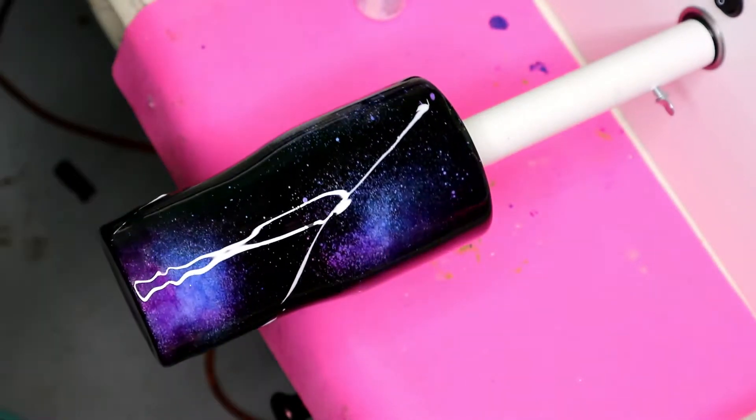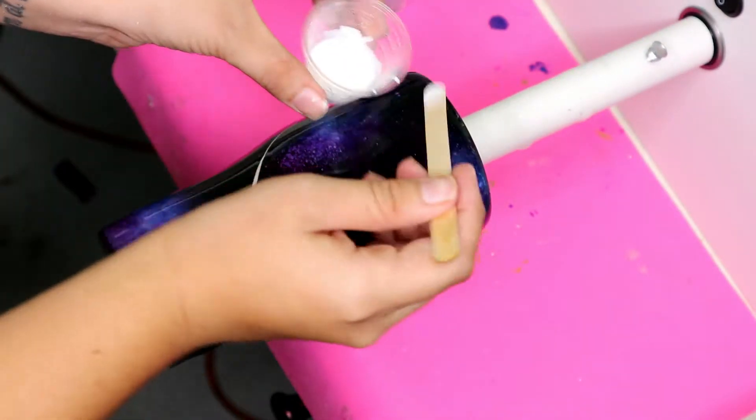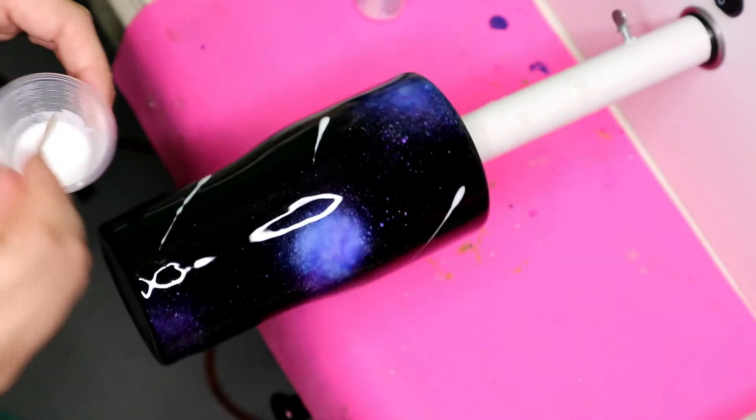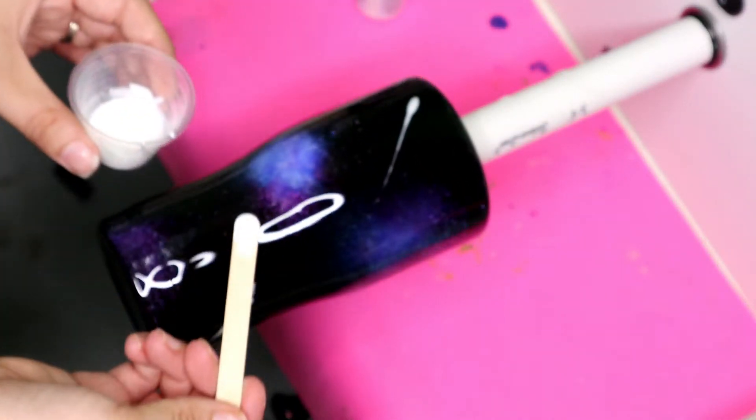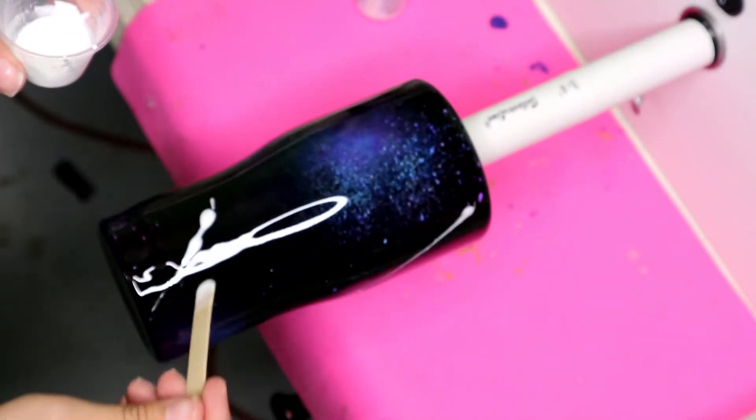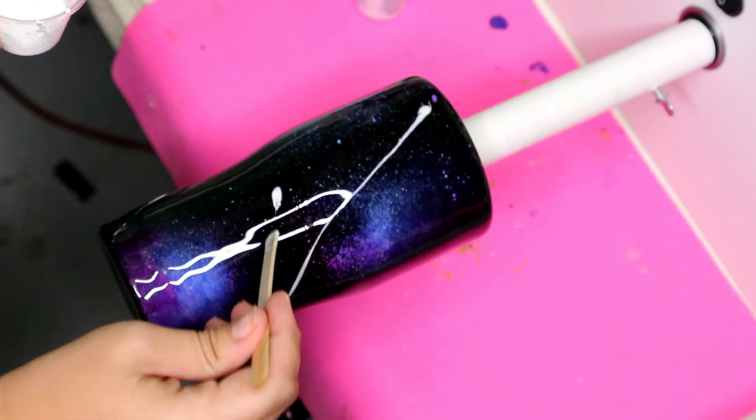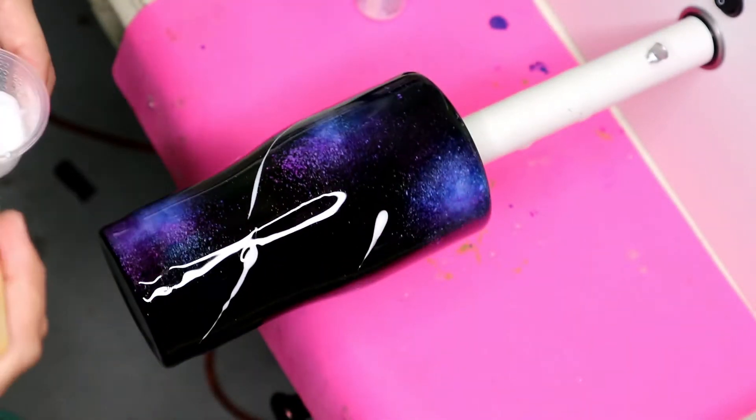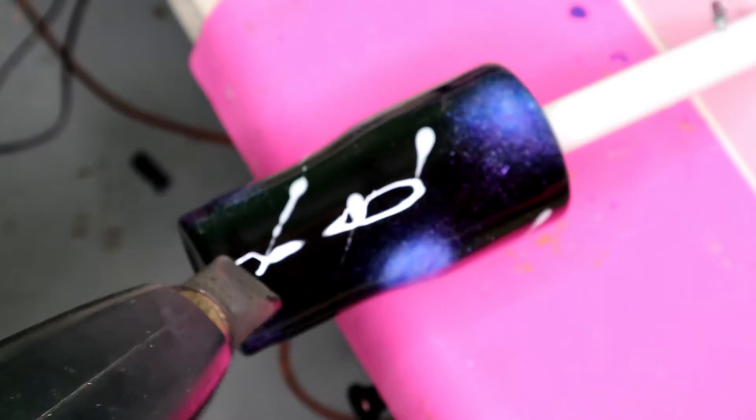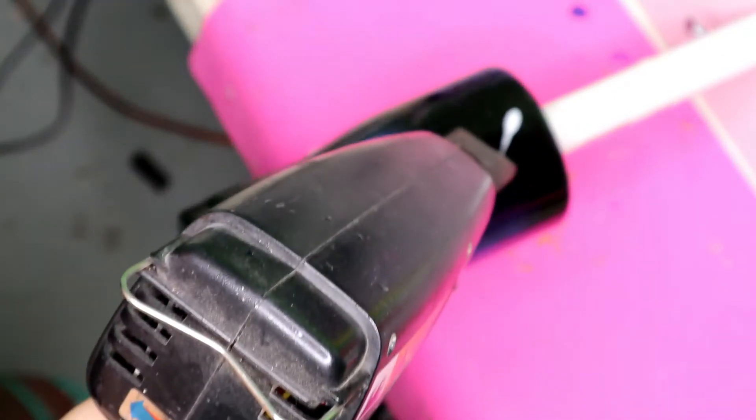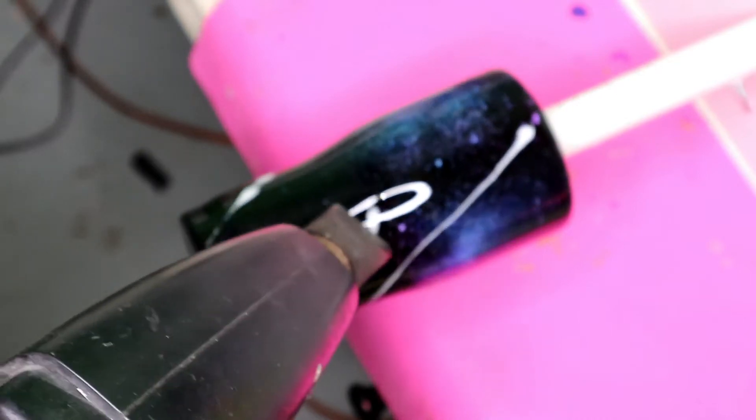So first you're going to want to lay down a layer of epoxy because you want your epoxy pigment to move. Once you get that all smoothed out, you are ready to add the white little lines here. I'm not really sure what to call them, like a Milky Way type effect I guess. And I just took that on a popsicle stick and randomly added lines in the direction I wanted them to go.